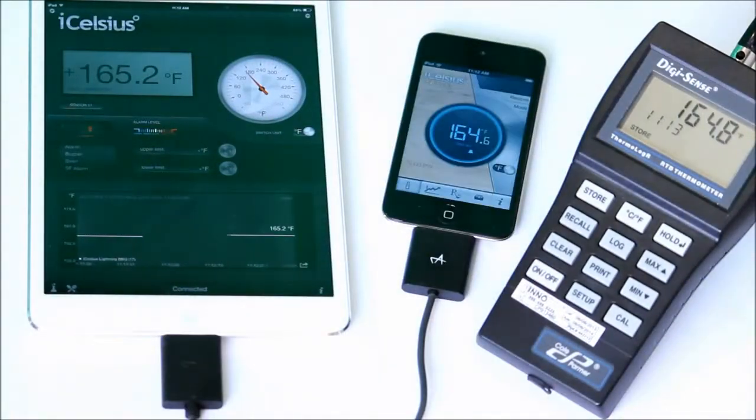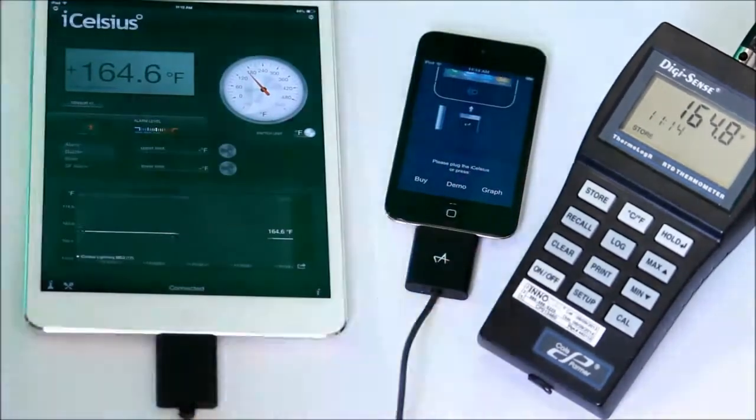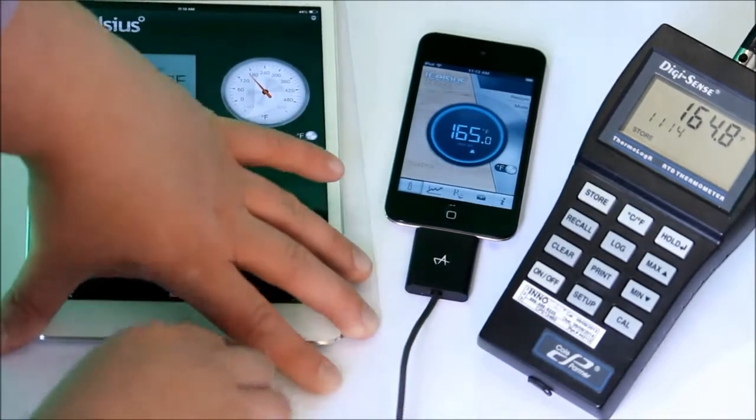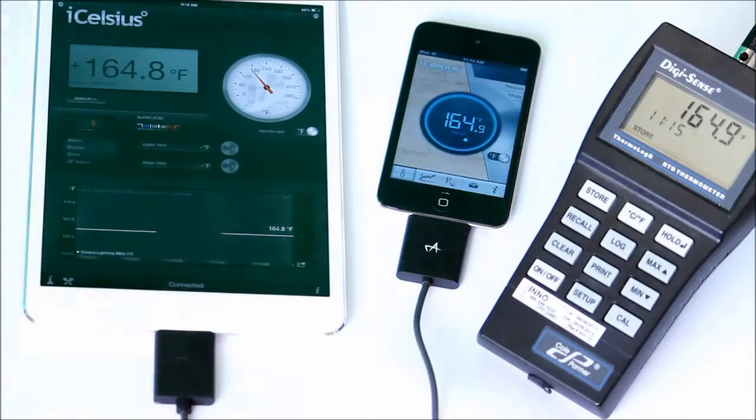BBQ lightning probes are labeled 1 through 5 and are being tested on the iPad Mini on the left. BBQ with 30 pin connectors are labeled 6 through 10 and are being tested on the iPod Touch in the center.